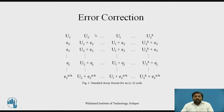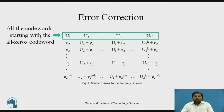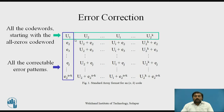Whatever figure we are seeing here is the standard array format for an (n, k) code, where n is the number of codeword bits and k is the number of data bits. Here you can see this is the first row of your standard array, which contains all the codewords starting with the all-zero codeword. This first column contains all the correctable error patterns.